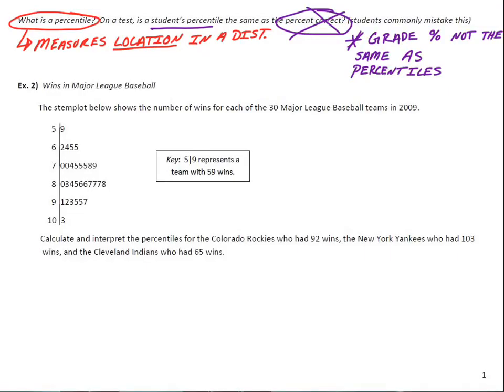So the next example has to do with Major League Baseball teams and how many wins they have in a season. And specifically, it's the 2009 season. Here is a stem and leaf plot showing the win totals among all 30 Major League Baseball teams. So it says to calculate and interpret the percentiles for the Colorado Rockies, who had 92 wins, the New York Yankees, who had 103 wins. Looks like they're actually the number one team in terms of wins. And the Cleveland Indians, who had 65 wins. And I'm going to color code these sort of based on those teams' colors. Colorado Rockies will do purple. New York Yankees will do black. Cleveland Indians will do red.